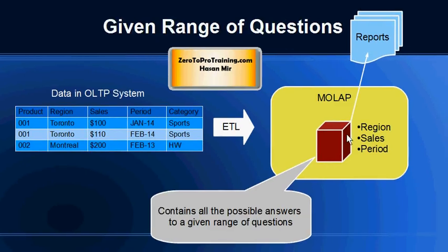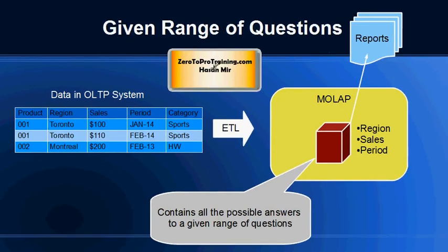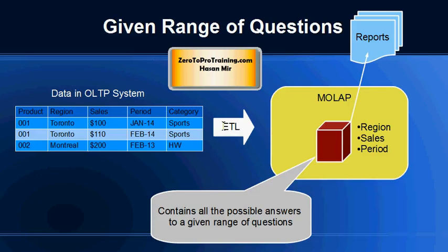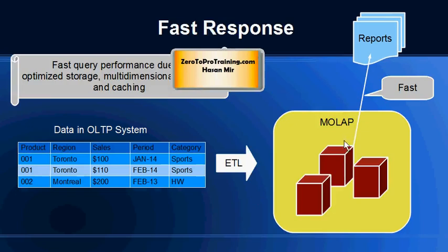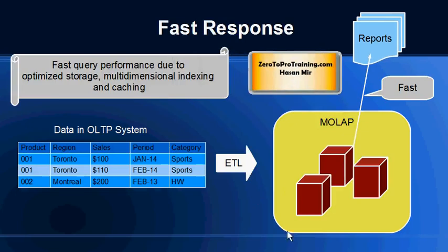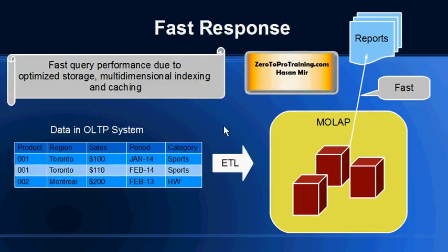Cubes are created for a given range of questions. We already know in advance what questions management will be asking the system periodically. For each type of question, a cube has to be ready in the system so that data can be returned to the reports quickly. The response is pretty fast — it is usually well indexed — and the way data is kept in the cubes results in very fast performance. Most OLAP solutions offer multidimensional indexing and caching.